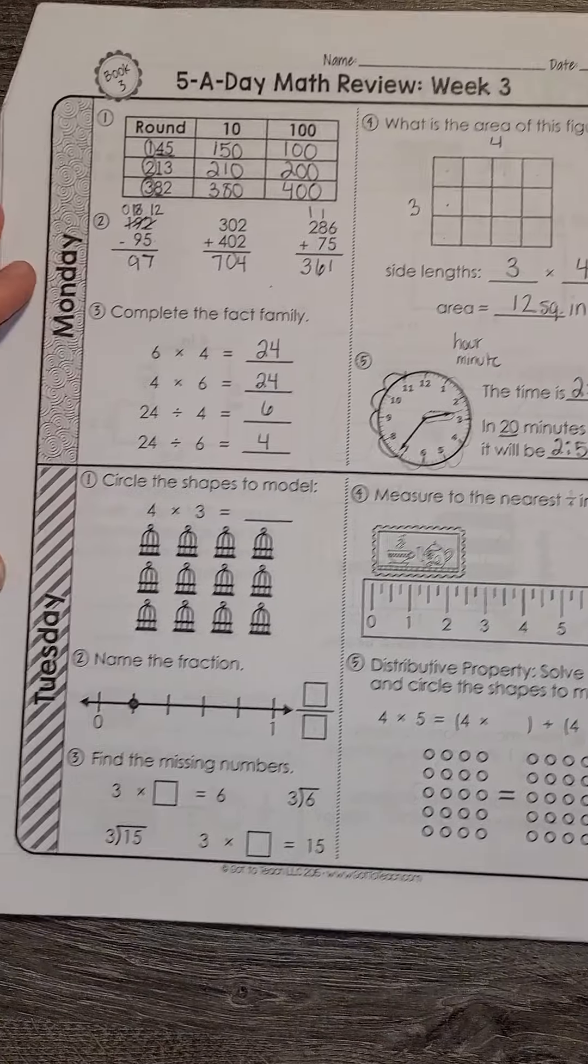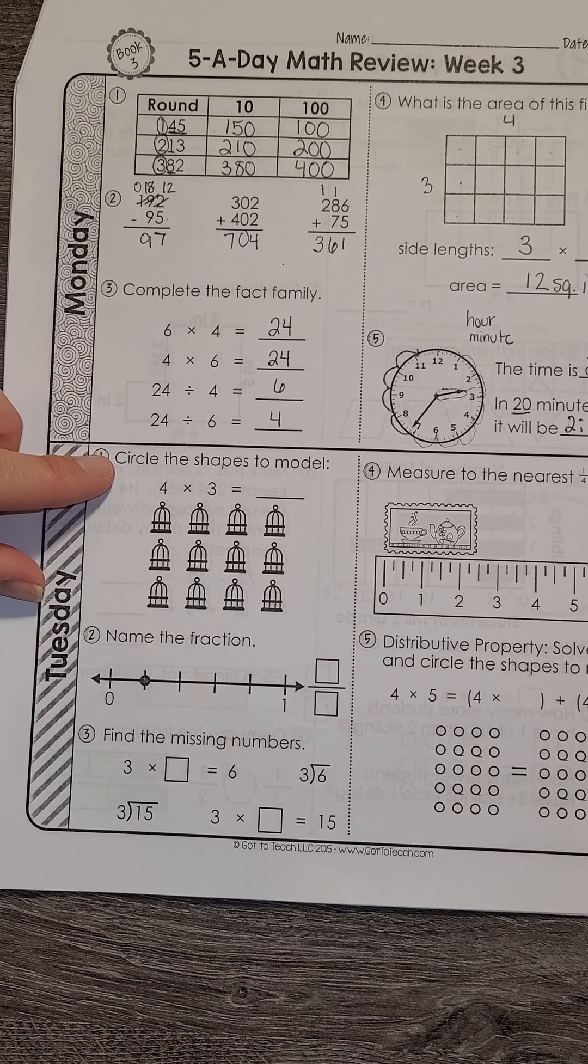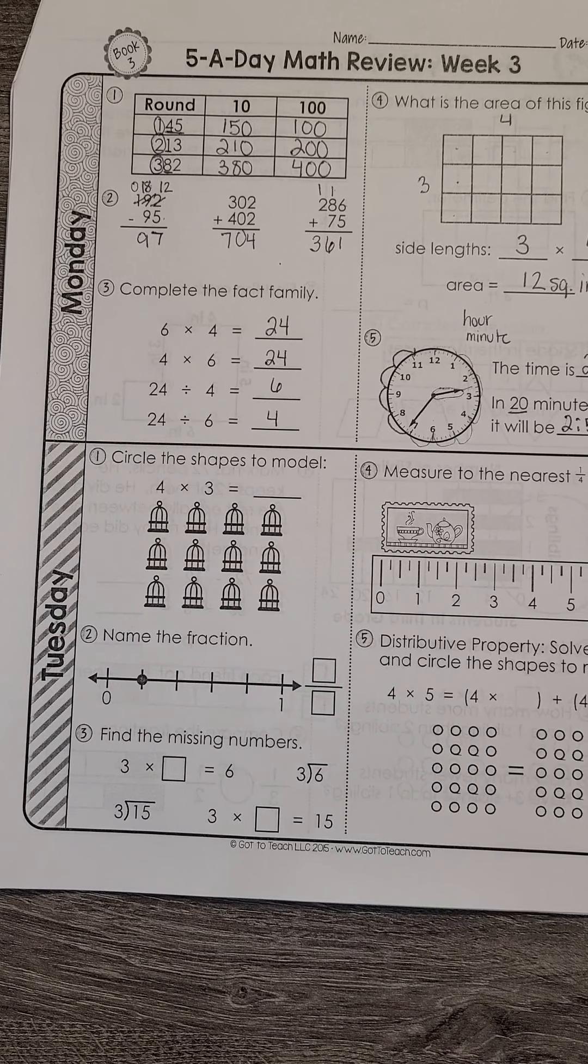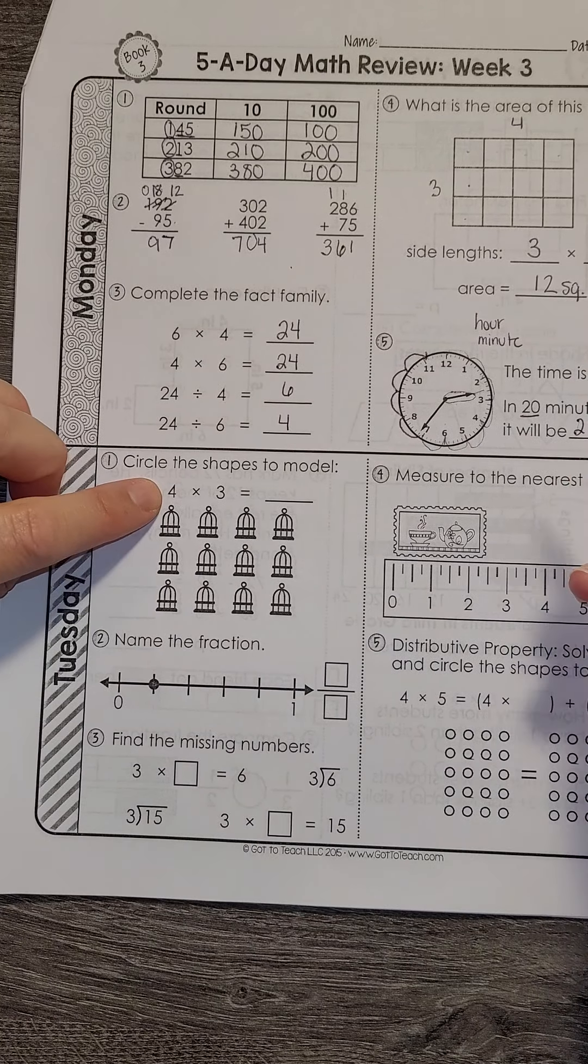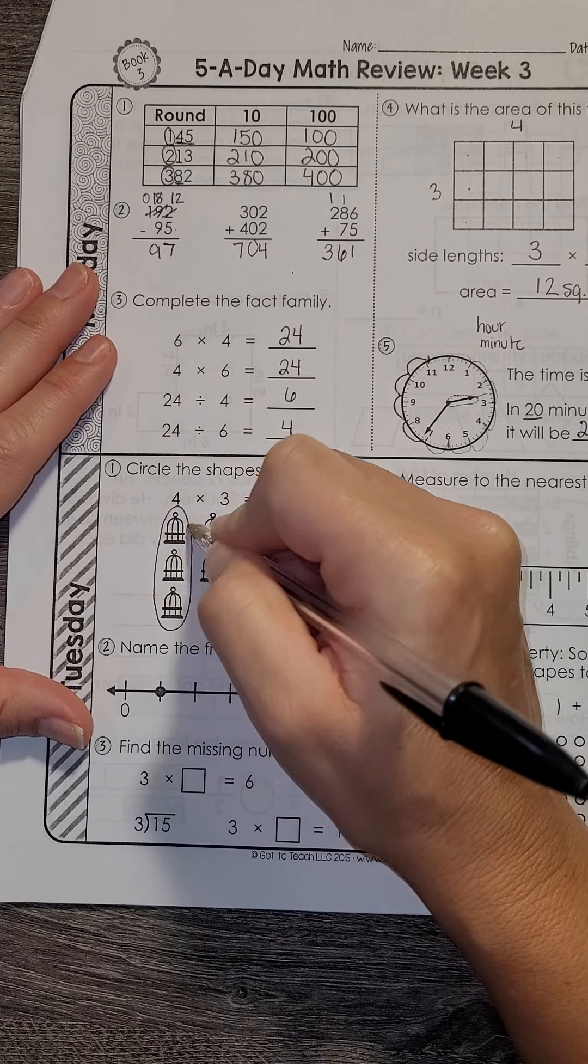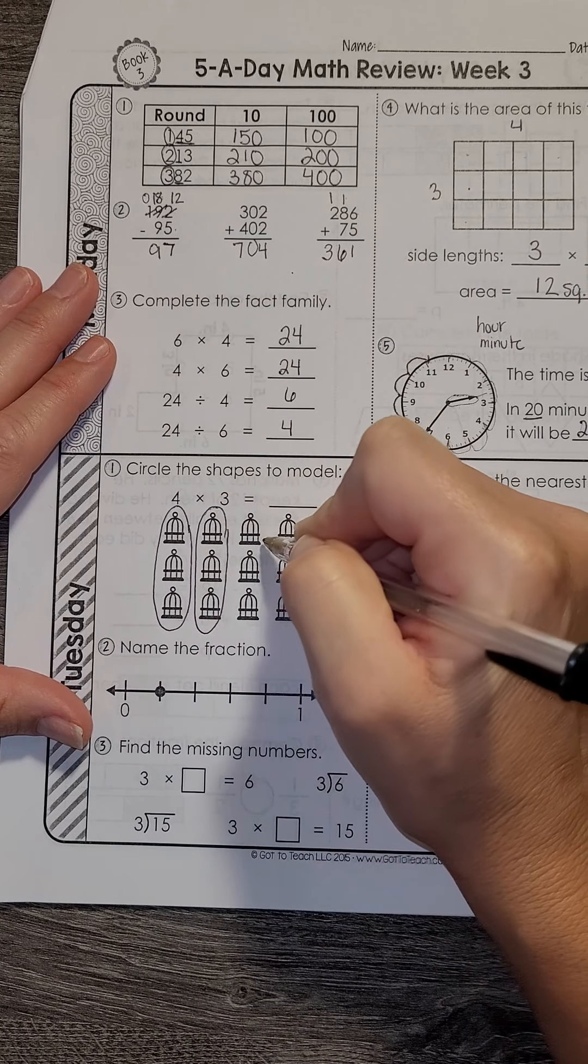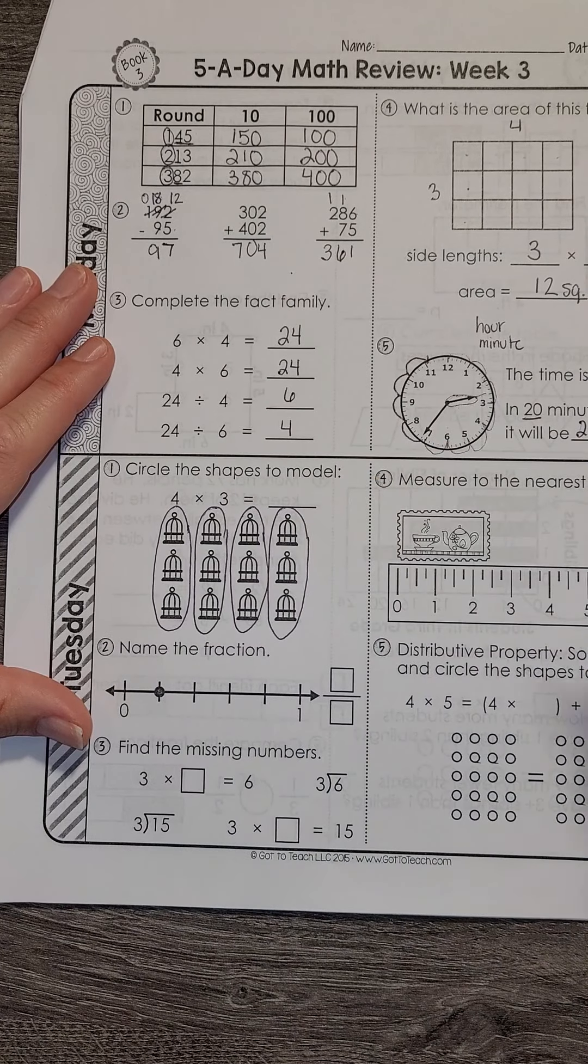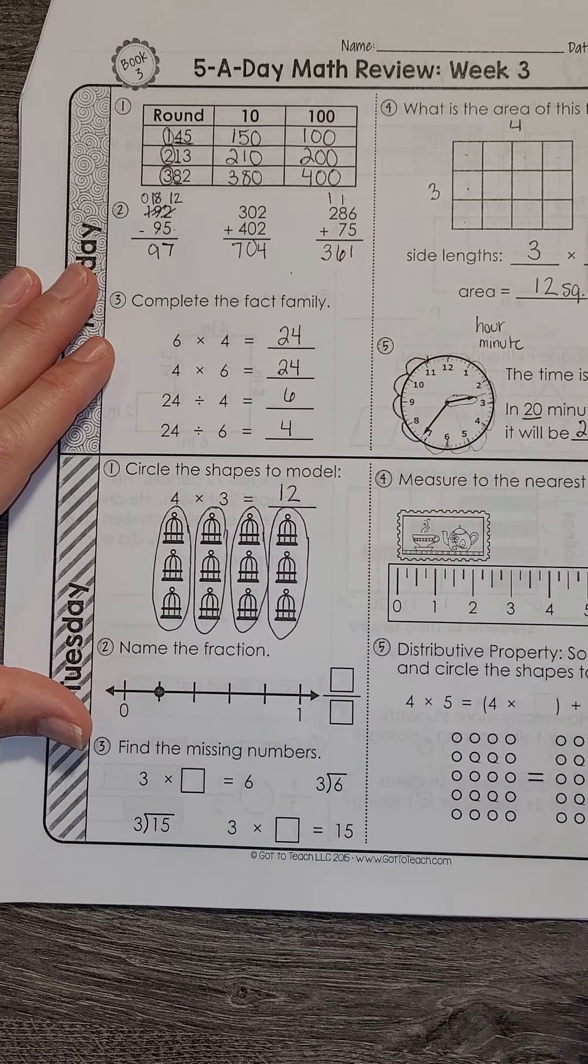Let's look at Tuesdays. First we need to circle the shapes to model 4 times 3. So that would be 4 groups of 3. So group 1 of 3, group 2 of 3, 3 of 3, and 4 of 3. And my product is 12.